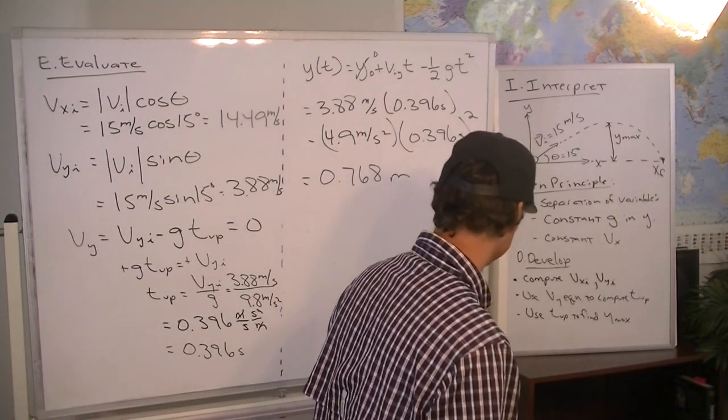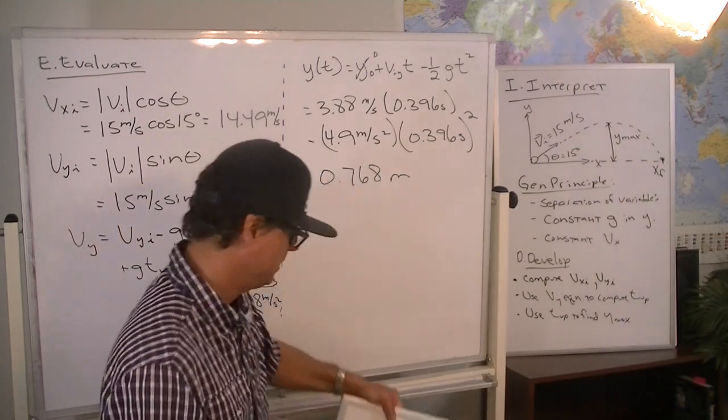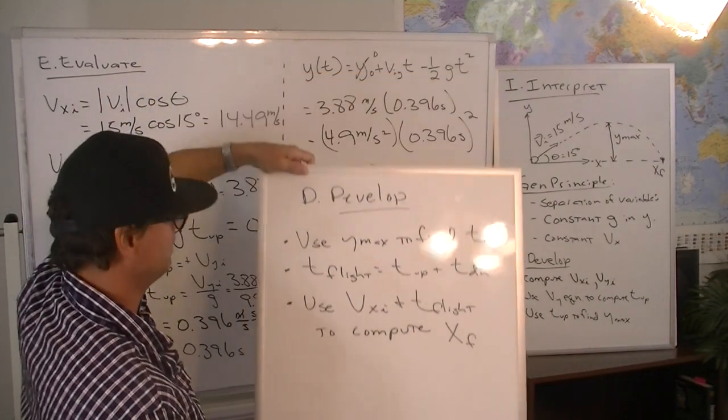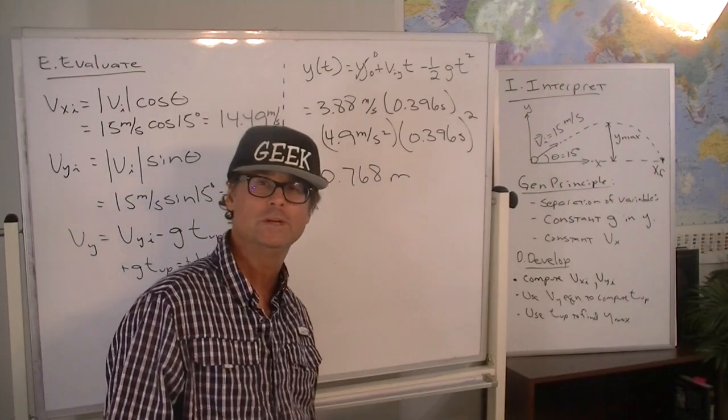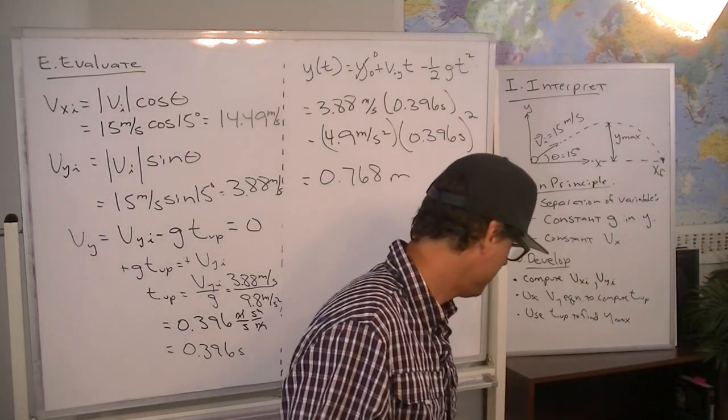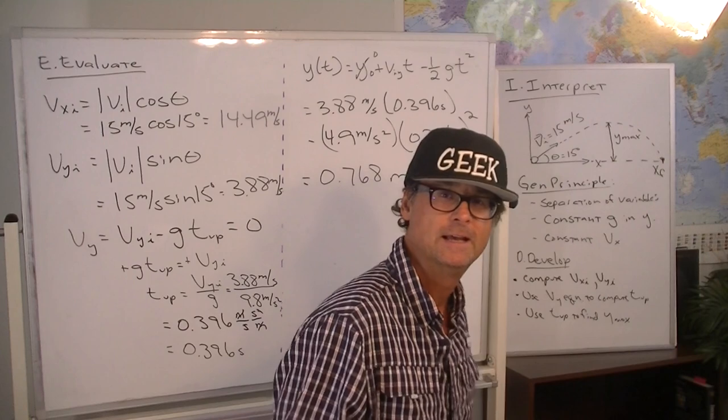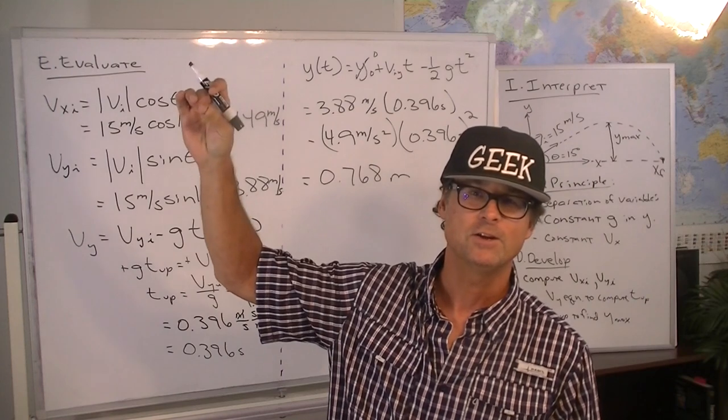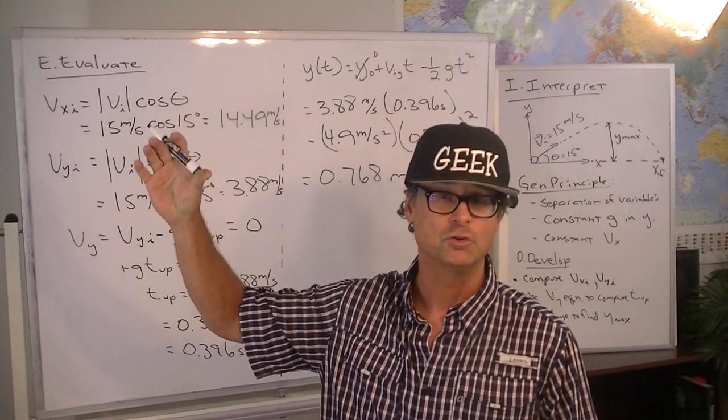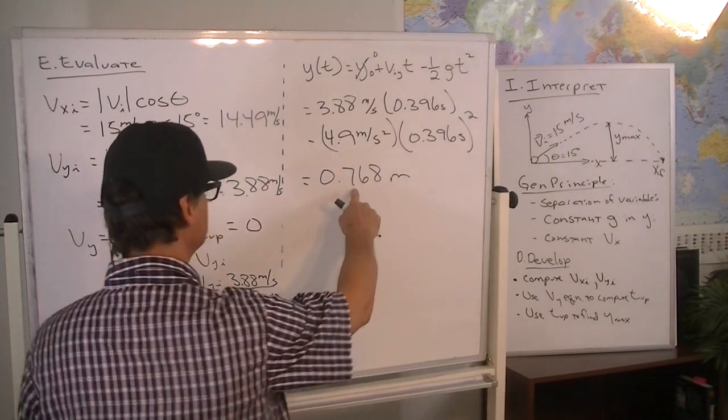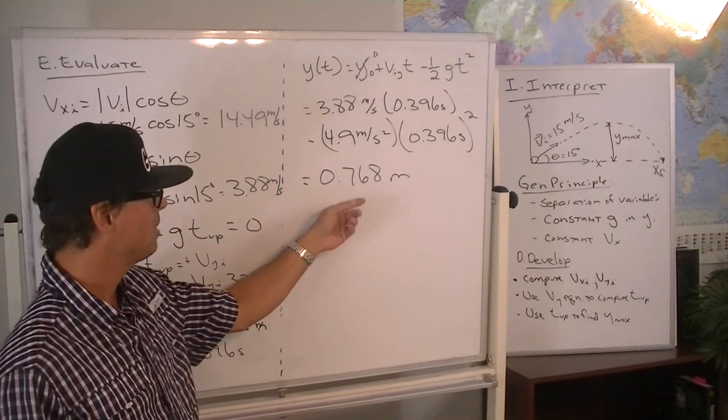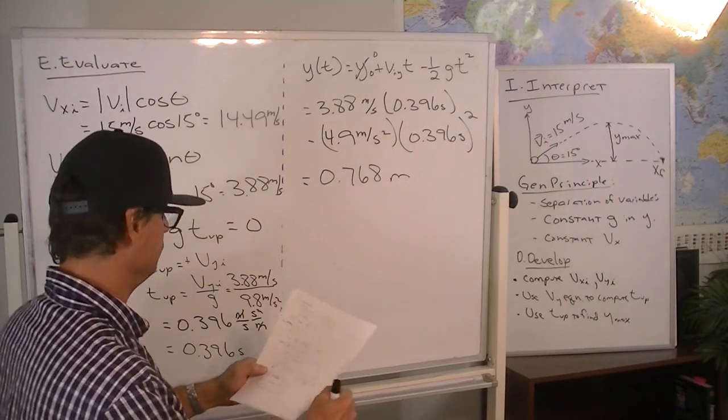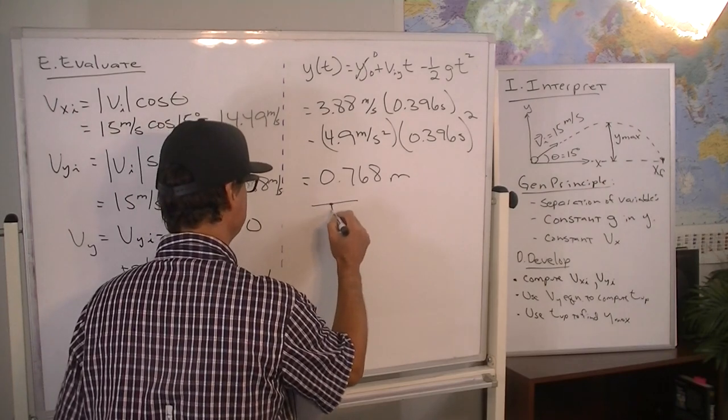Alright, so now, referring back to our plan here. We need to use the peak in Y to find T down. And this is because once an object reaches the apex of its flight or its peak, it's time to fall back to the earth. It's just as if you'd taken a stationary object and dropped it from this height. So, finding T down is just asking the question, how long does it take an object to fall 0.768 meters? So, let's sort of work a mini problem there.